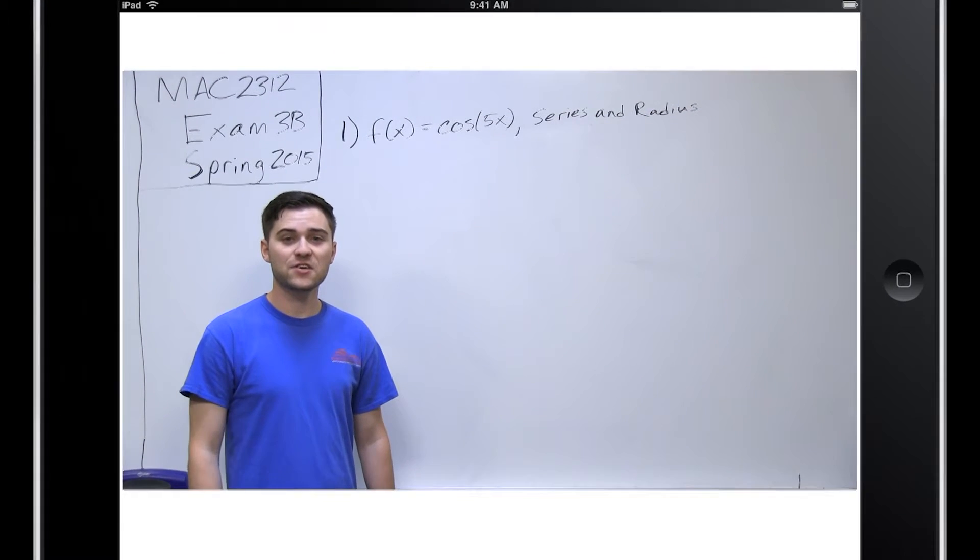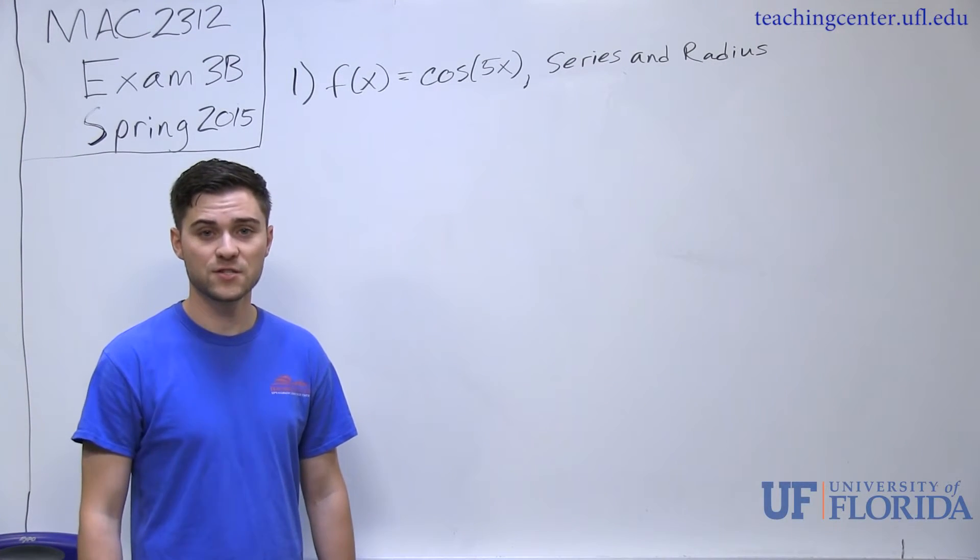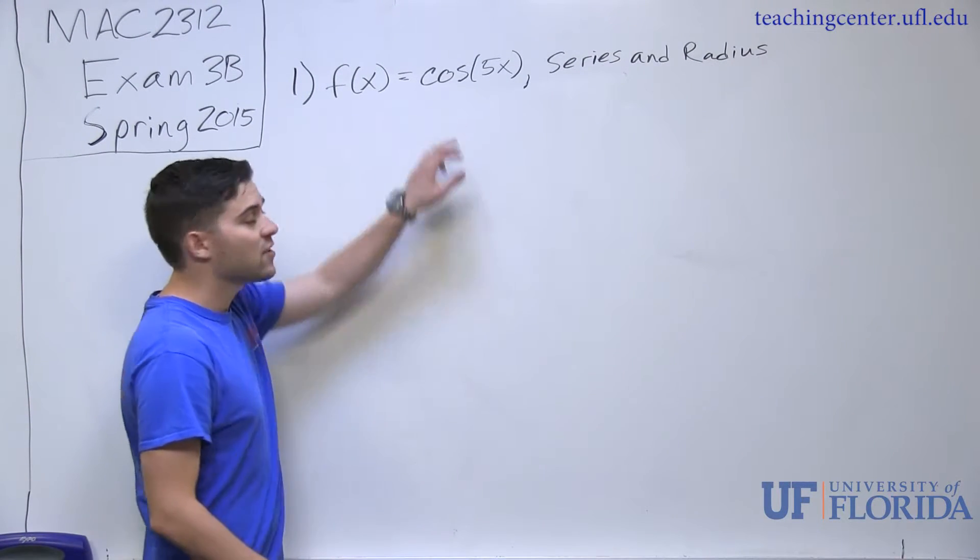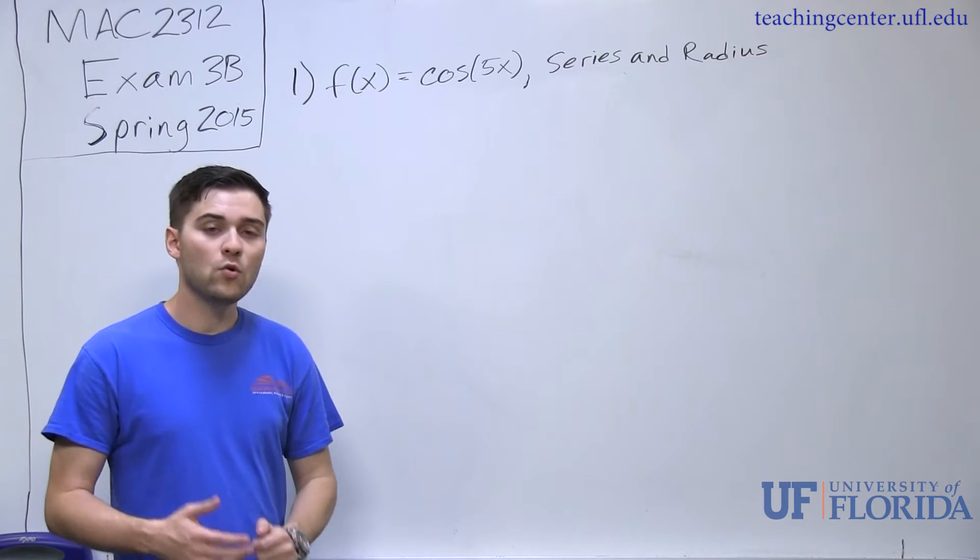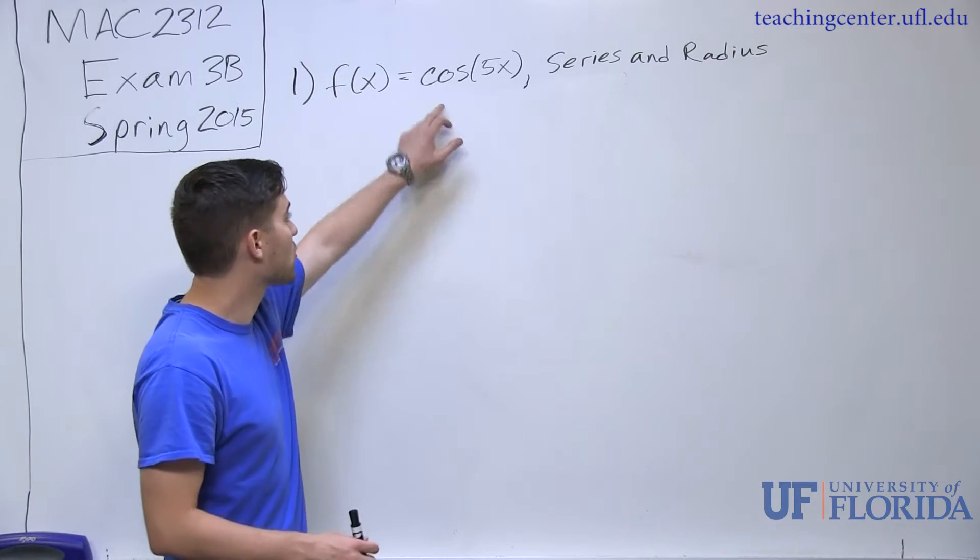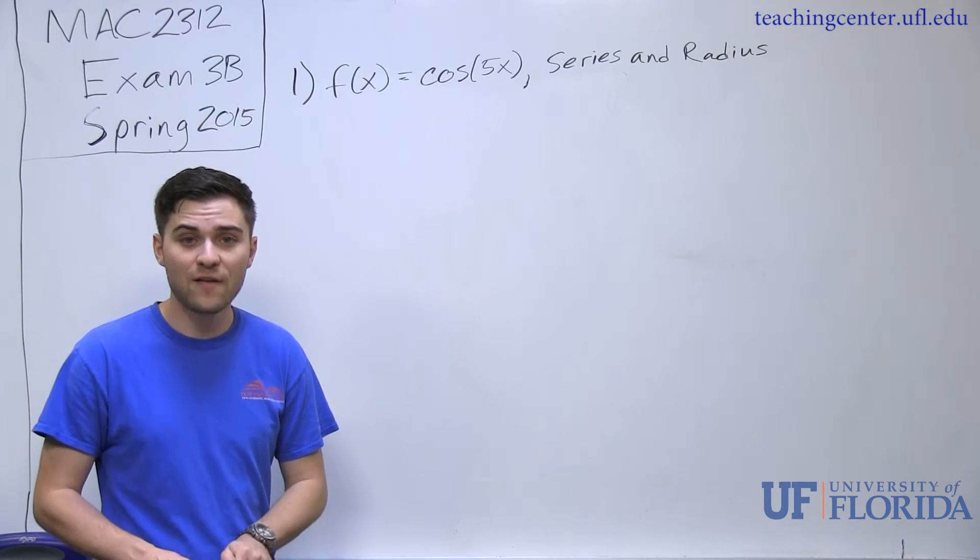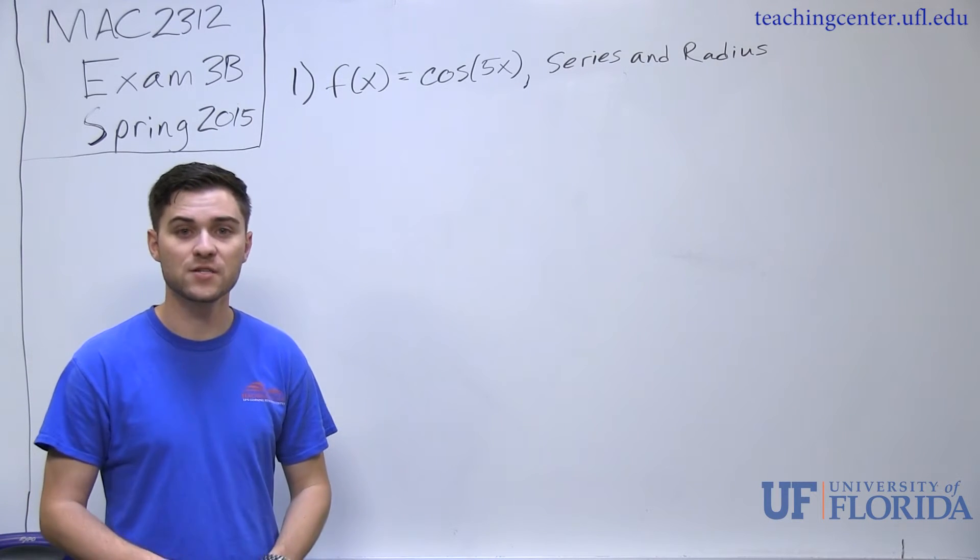Problem number one is asking you to find the Maclaurin series and the radius of convergence of a given function. In this case, our function is cosine of 5x. Remember, if you already know the Maclaurin series for cosine of x, you can find the Maclaurin expansion for cosine of 5x. All you have to do is plug in 5x anywhere you see an x inside of your series.